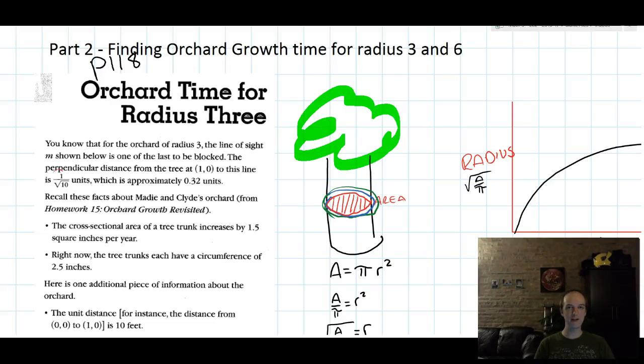Welcome back. Now we're going to talk about finding the orchard growth time for orchards of radius 3 and then for orchards of radius 6.